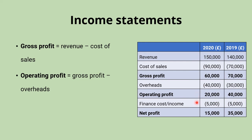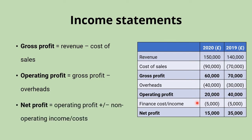Moving further down, other costs include finance costs, income, or taxation — things not related to the usual trading activities of the business. For example, you might have a loan with interest to pay, or investments providing income unrelated to selling shoes. These come below operating profit. If they are costs you take them away; if they are income you add them on. Generally, most businesses have loans to pay interest on and possibly taxation. These are shown in brackets as negative, giving the net profit figure at the bottom of the income statement.